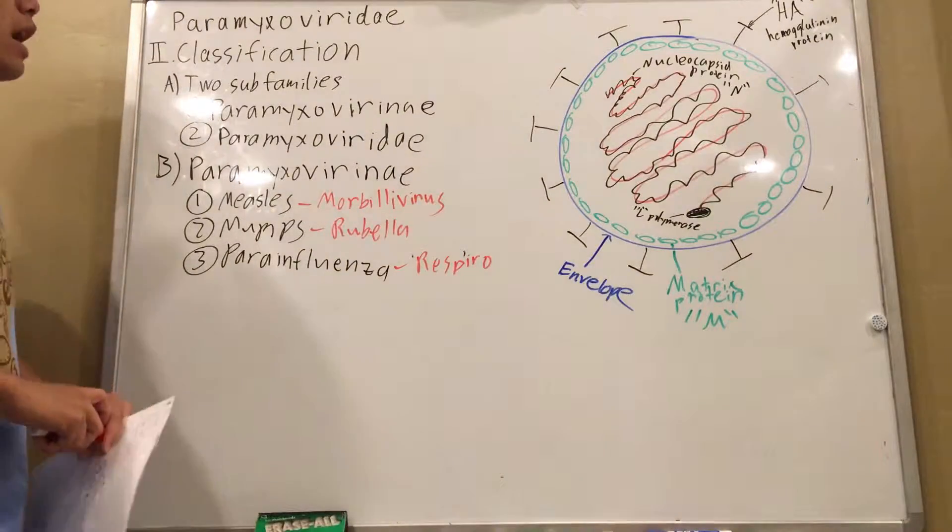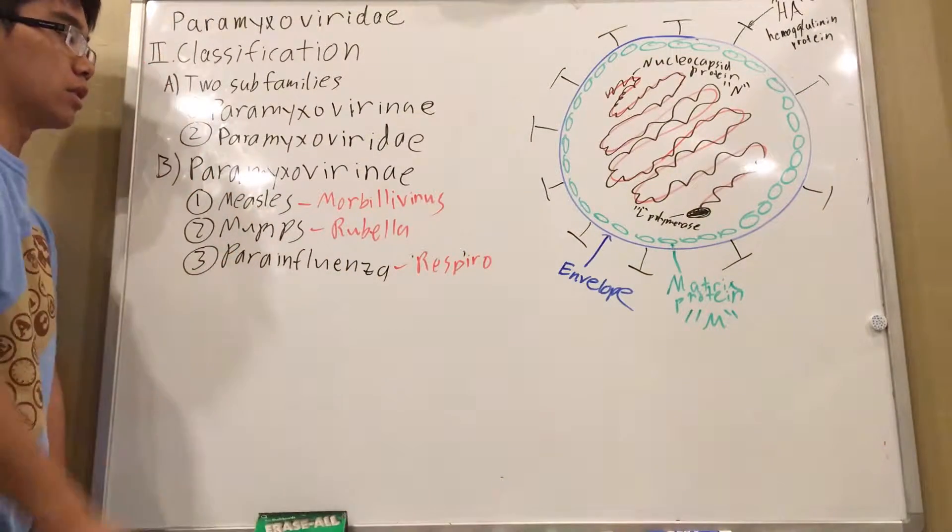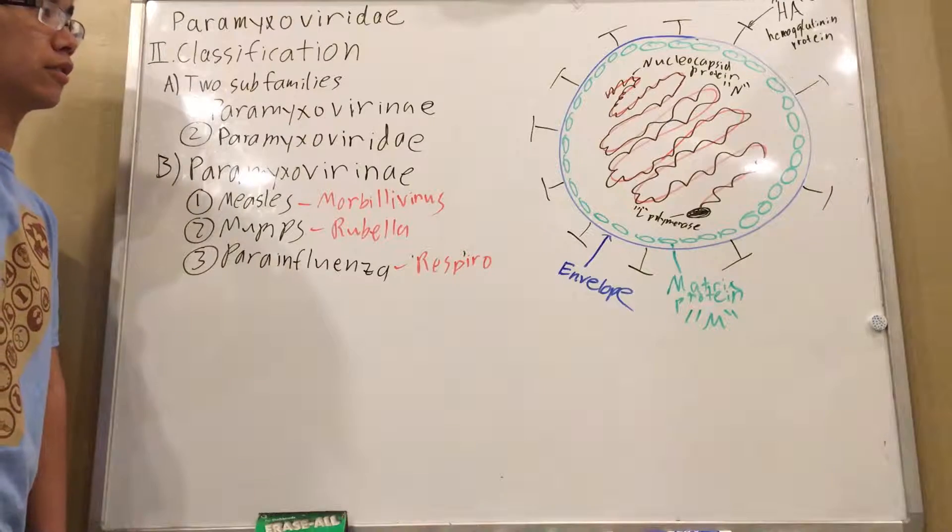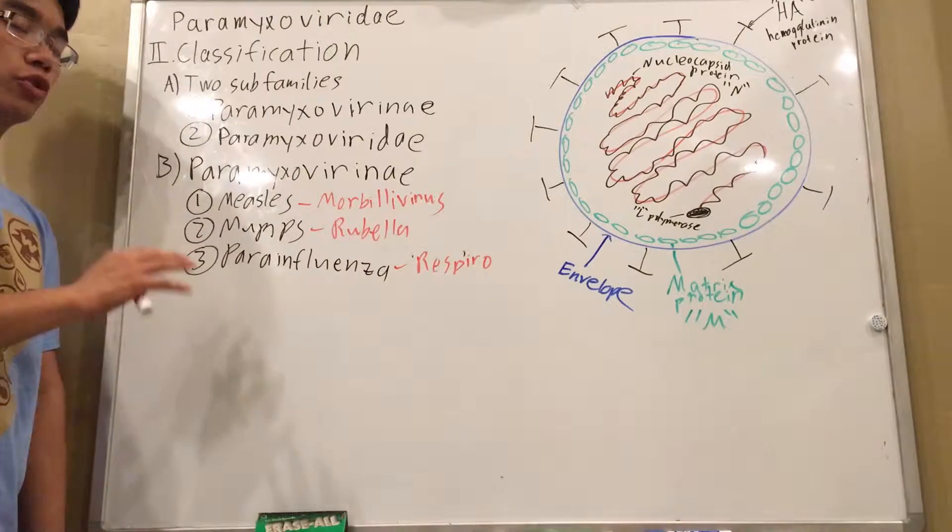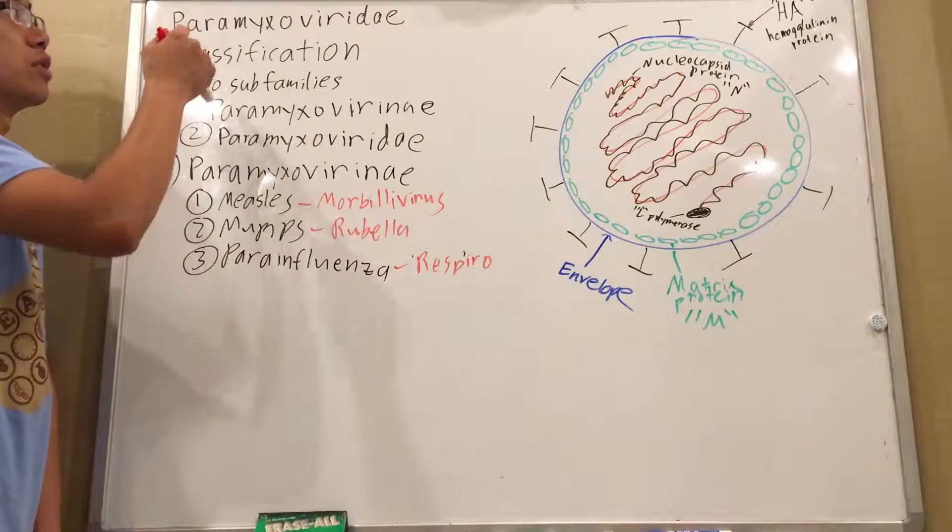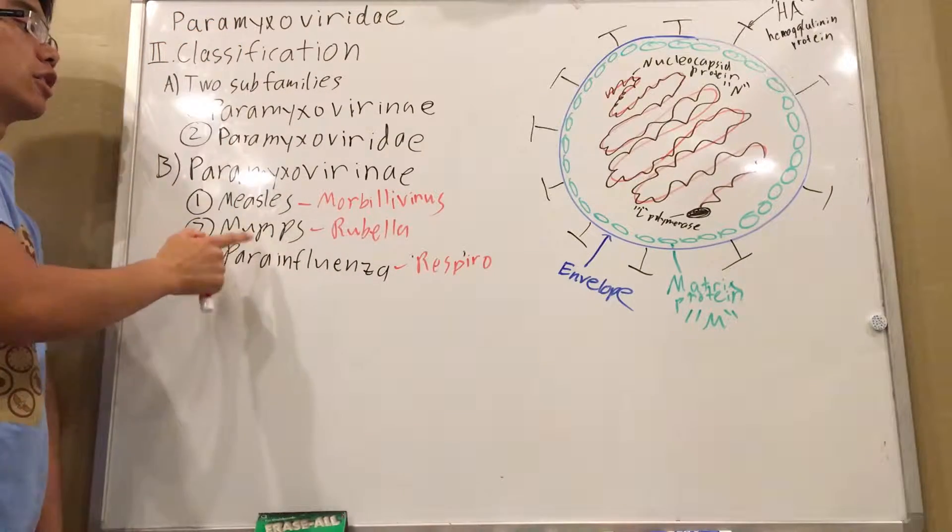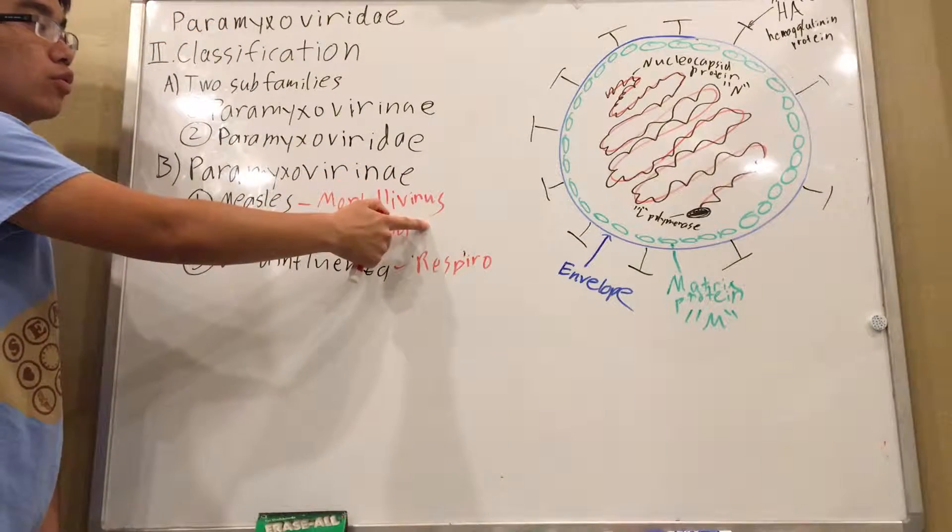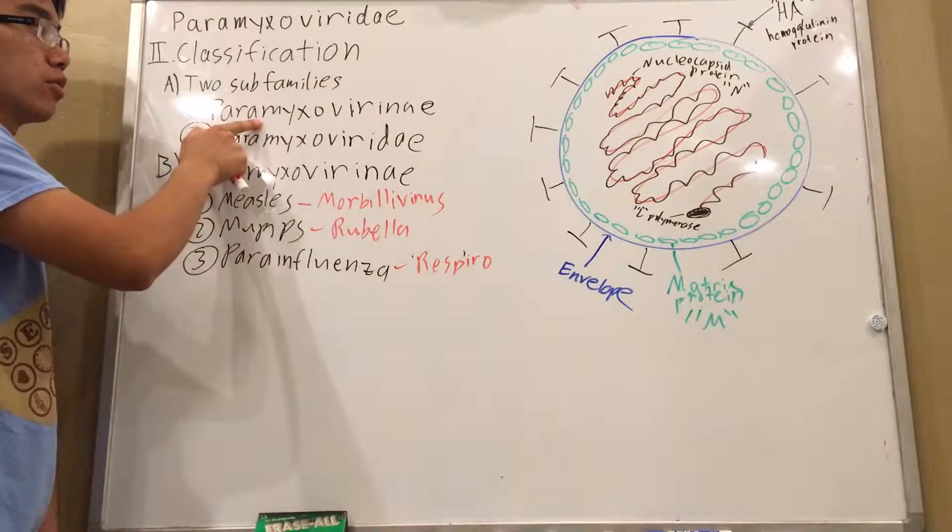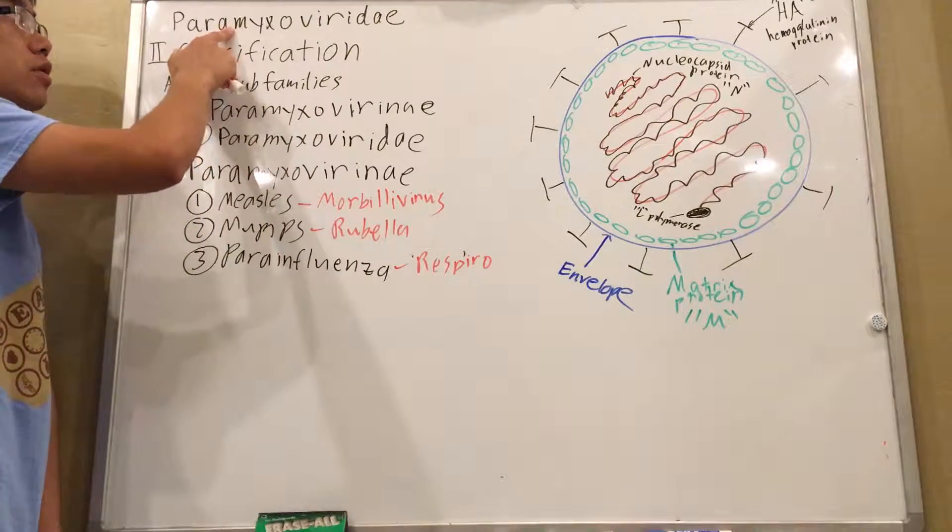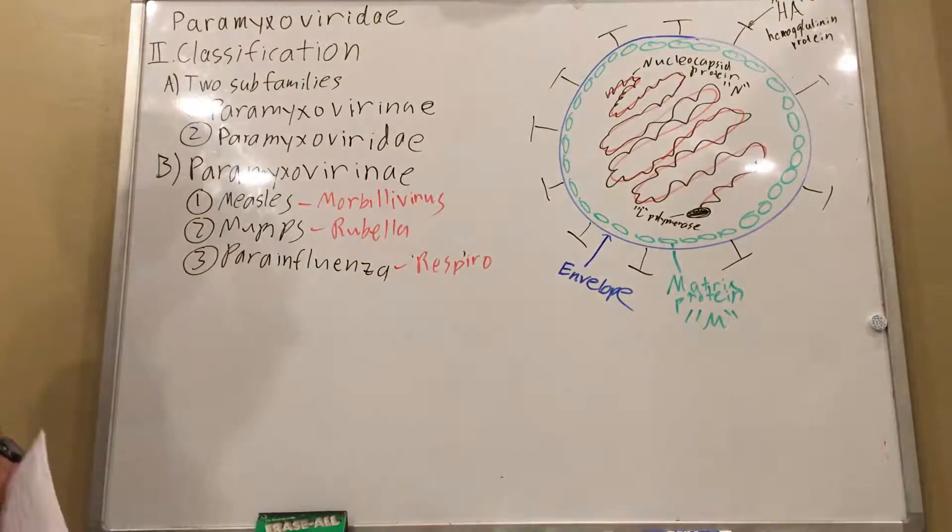So if ever you're asked the question about what group measles belongs to, and they want you to go down to the most specific group as possible, you would say it's part of the Paramyxoviridae, it's part of the Morbillivirus subgroup, which is part of the Paramyxovirinae subgroup, which is part of the Paramyxoviridae family.